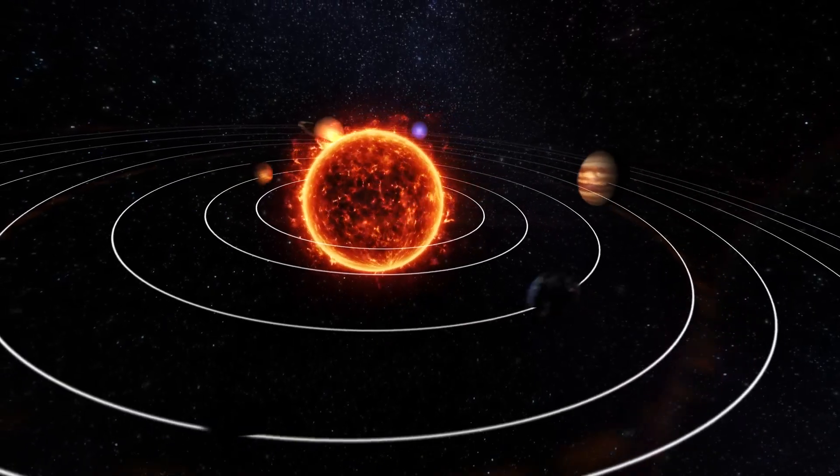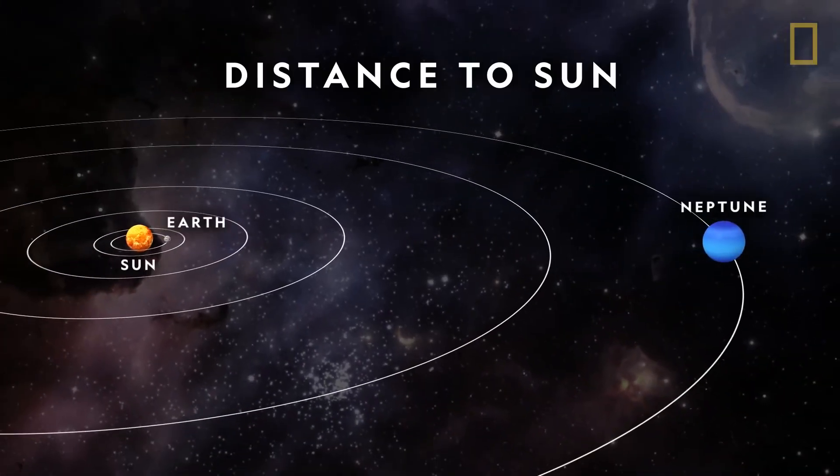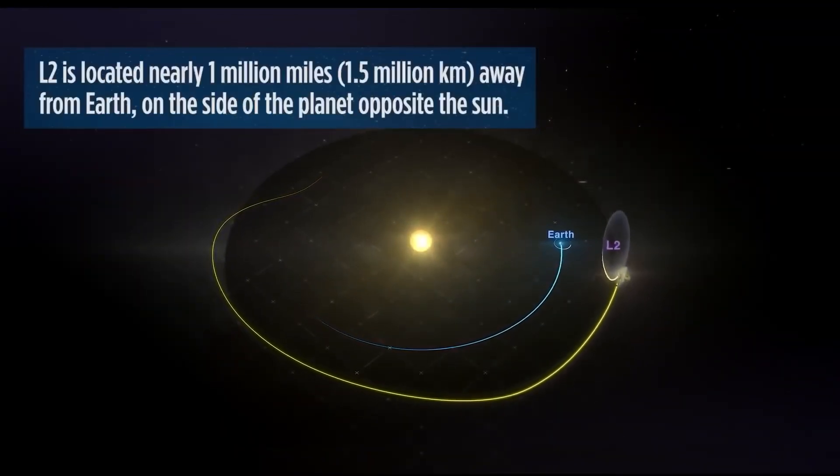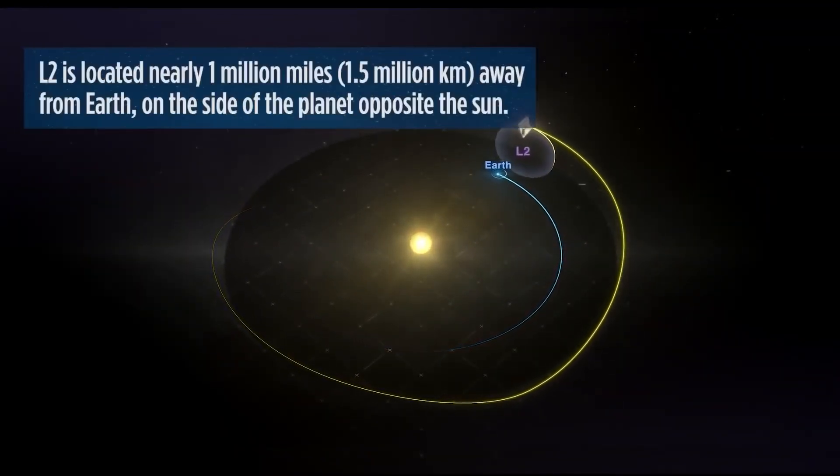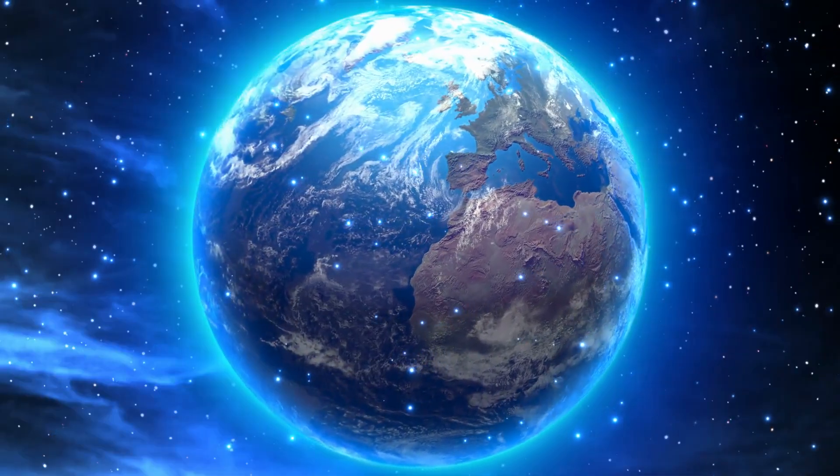Neptune is 30 times as far from the sun as Earth and orbits in a distant, dark region of the solar system. Because of how faint and dim the sun appears from such a significant distance away, a scorching day on Neptune is equivalent to early nightfall on Earth.